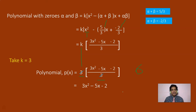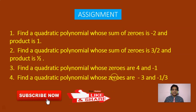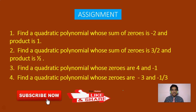This is how you can find the polynomial with given zeros. This is your assignment for today: the first two problems give sum and product directly — use alpha plus beta and alpha beta. The next two problems give zeros directly, so calculate alpha plus beta and alpha beta first. Solve these problems and post the answers. Thank you.